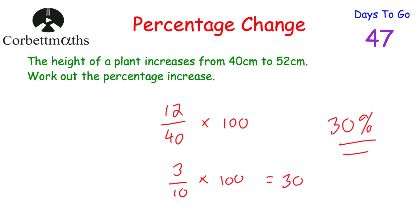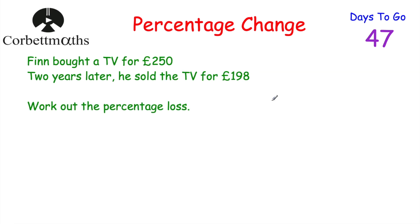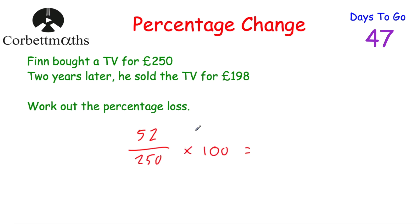The percentage increase in height of the plant is 30%. Now let's look at one last question — this is a calculator question, so feel free to pause and try it yourself. Finn bought a TV for £250 and two years later sold it for £198. Work out the percentage loss. The change is 250 minus 198, which is 52. Divided by the original, £250, multiplied by 100. So 52 divided by 250 times 100 equals 20.8. The percentage loss is 20.8%. Well done if you got that.